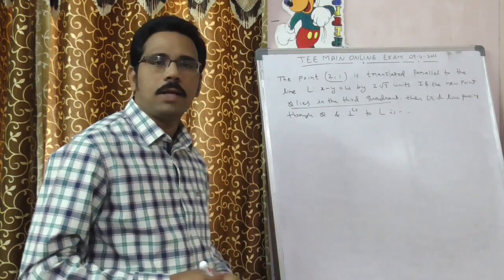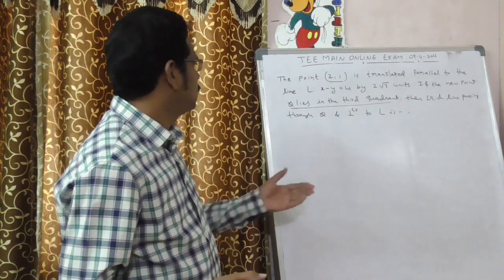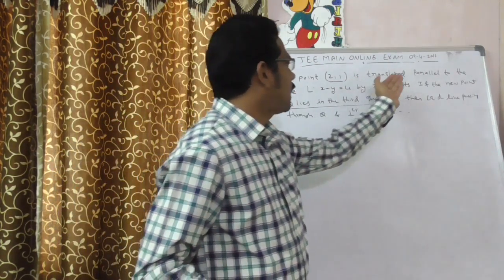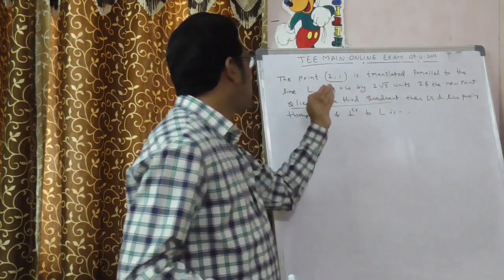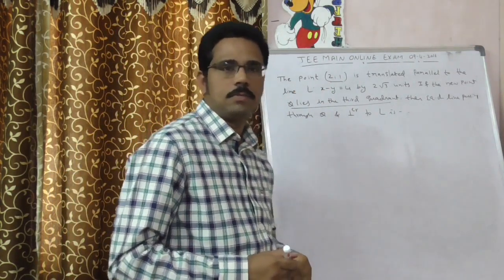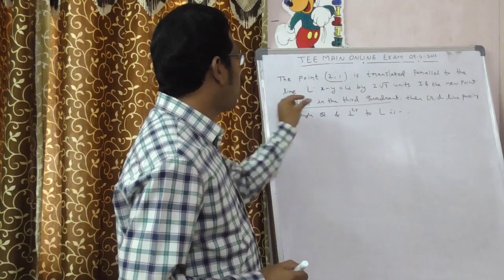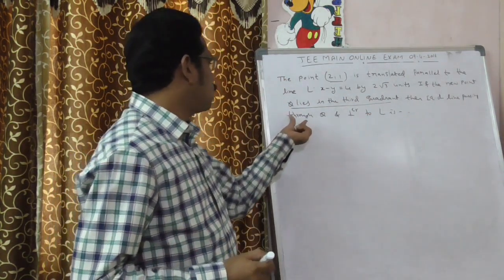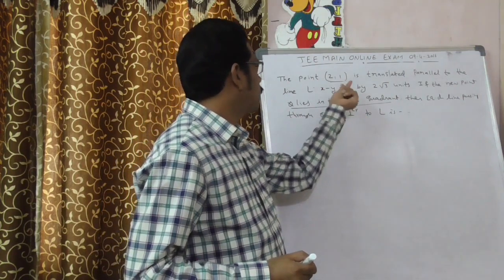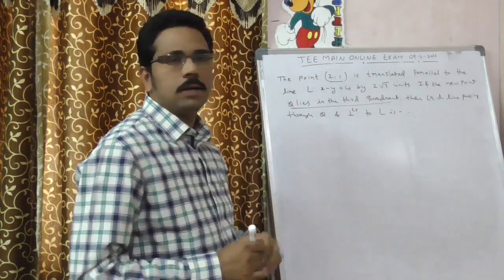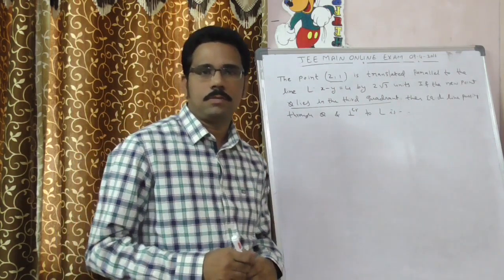Hi, this is JEE Main online exam question which was conducted on April 9, 2016. Straight line stopping. The point is translated parallel to the line x minus y is equal to 4 by 2 root 3 units. If the new point q lies in third quadrant, then equation of line passing through this q and perpendicular to given line is what?